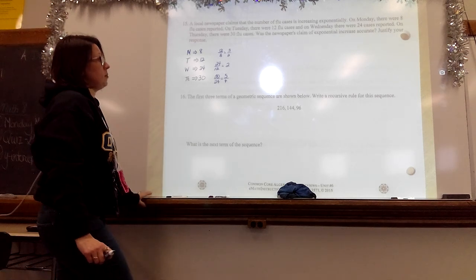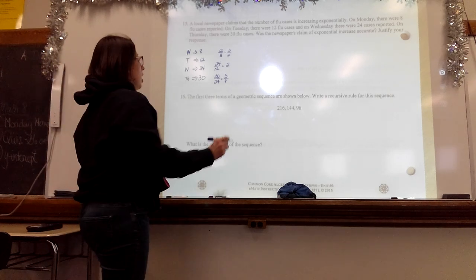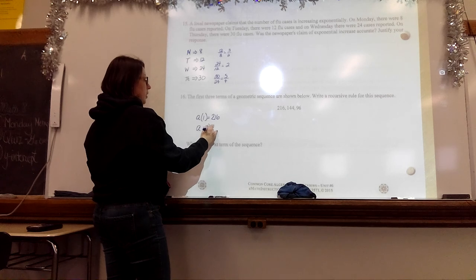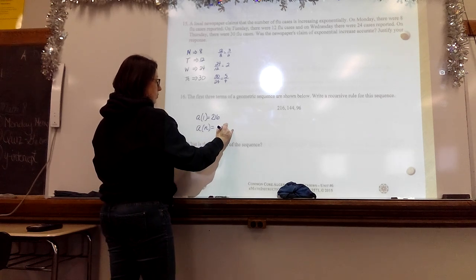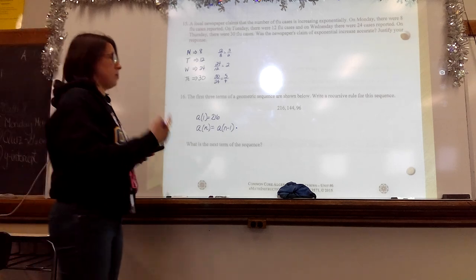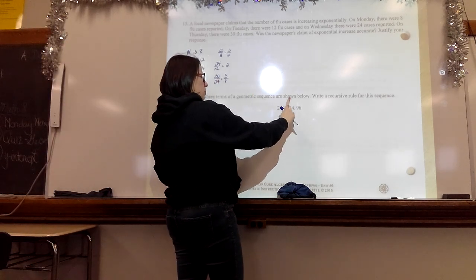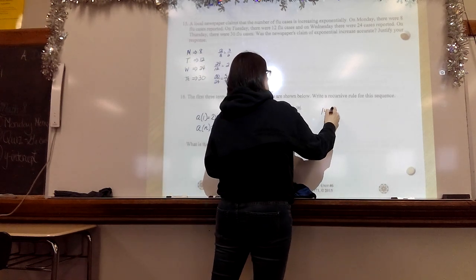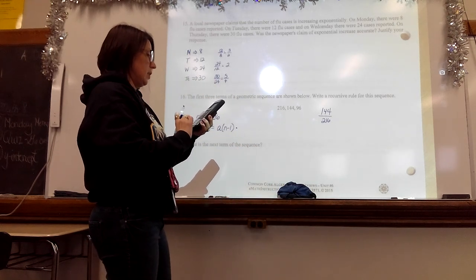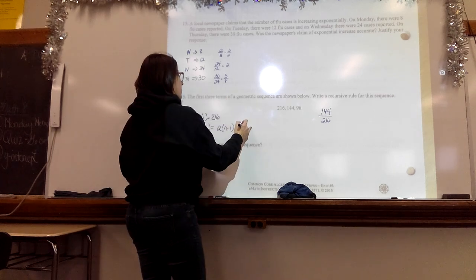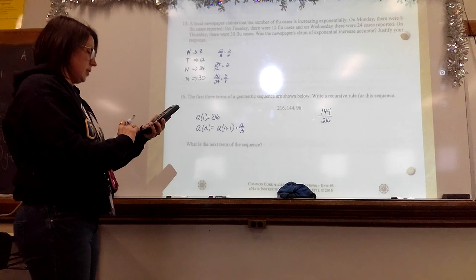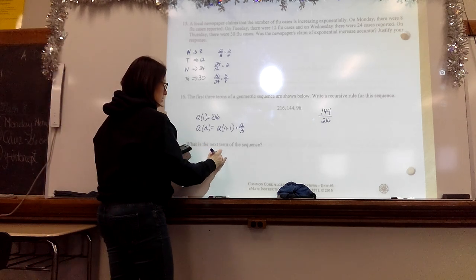Number 16, the first three terms of a geometric sequence: 216, 144, 96. Write a recursive rule for this sequence. What's the next term? Recursive starts with the original one. So the original one is 216. Then, for each one after it, I take the answer of the one before it. It's geometric, so we know we multiply. If you look at that and you can't figure out what it's multiplying by, we find that ratio, which means we take this and divide it by that. So I'll do 144 divided by 216, which comes out to be 0.666, which means two-thirds. So there's the recursive rule: first term 216, multiply by 2/3. What's the next term? Just take your 96 and do times two-thirds, which is 64.